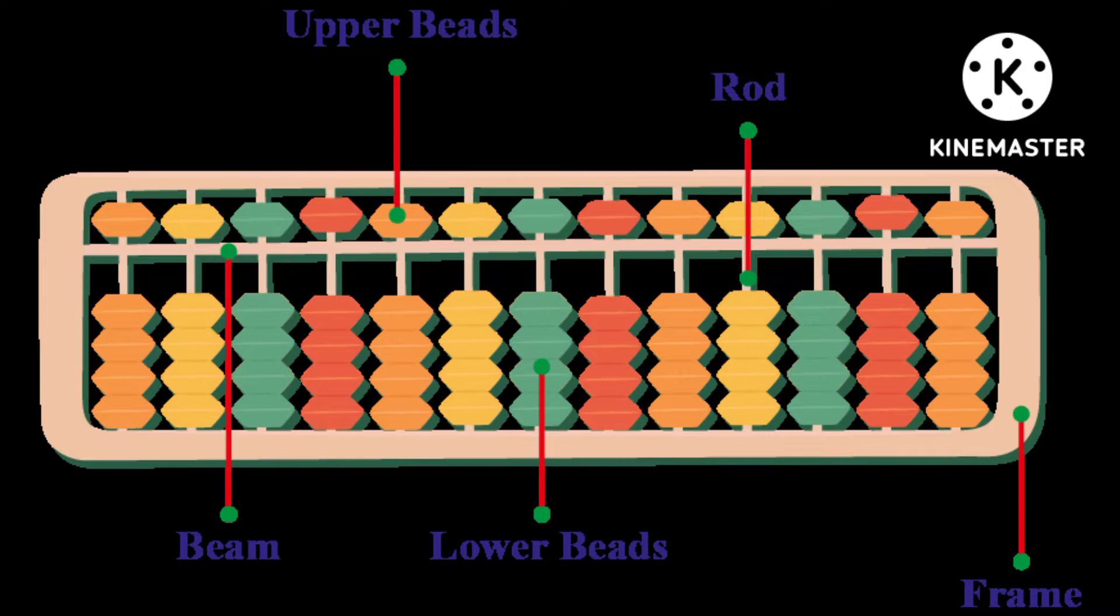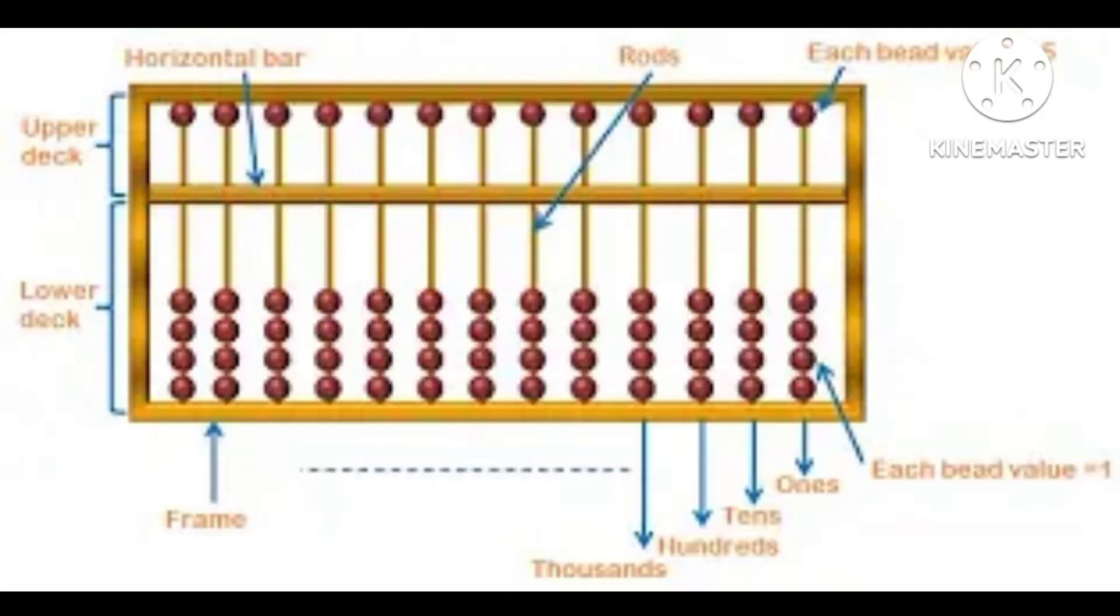Earlier counting devices that were used for counting are the human hands and their fingers that are capable of counting only up to 10. Toes were also used to count when they had to count more than 10.